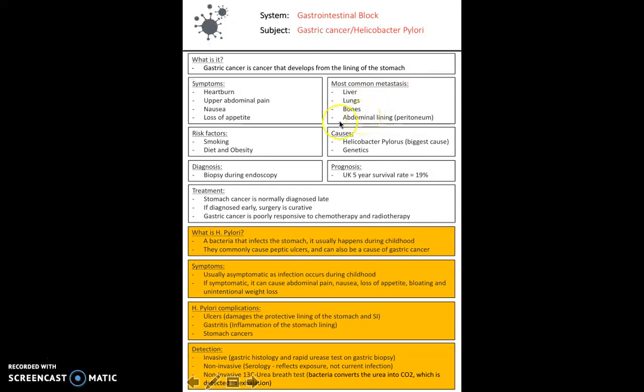Risk factors for gastric cancer include smoking, diet, and obesity. The two main causes are H. pylori and genetics, with Helicobacter pylori being the biggest cause of stomach cancer in the UK. It can be diagnosed through biopsy via endoscopy. The problem is that stomach cancer is normally diagnosed late. If diagnosed early, surgery is normally curative, but because it's poorly responsive to chemotherapy and radiotherapy, late diagnosis after metastasis is the biggest problem.